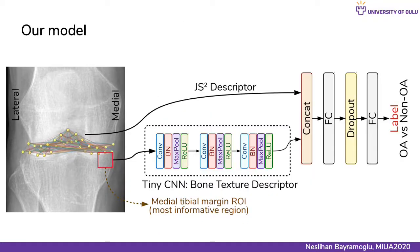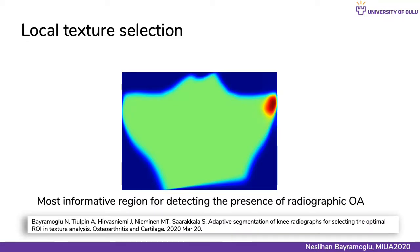How did we choose the small region of interest to assess bone texture? It is based on our previous study: in OA, the bone closest to the articular cartilage experiences the greatest effect and damage. Therefore, changes in bone texture are observed most at those regions, and particularly at the medial tibial compartment as shown in the figure with the red mark. Inspired by this, rather than using the whole joint radiograph, we employed only the most informative region in our study.